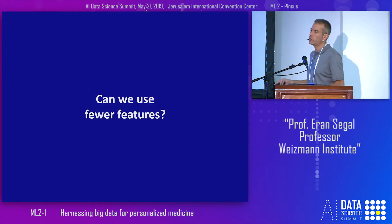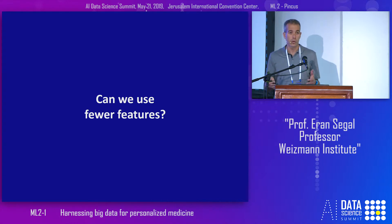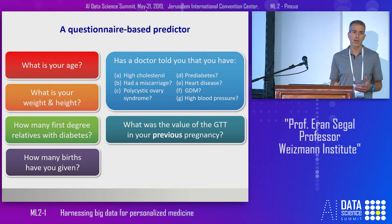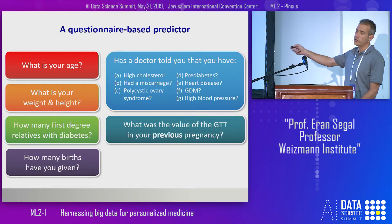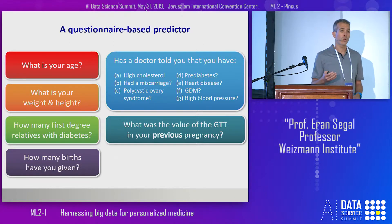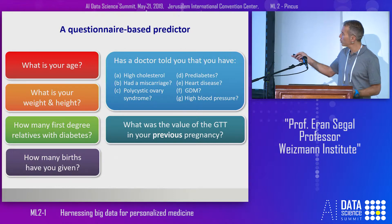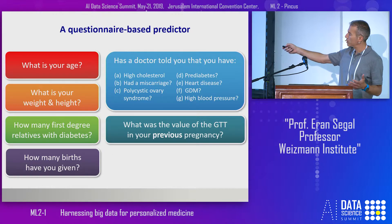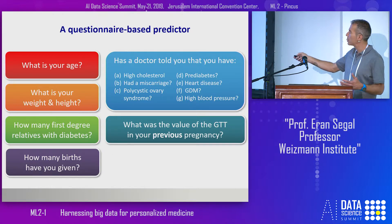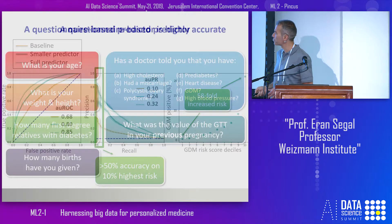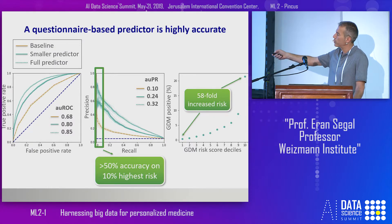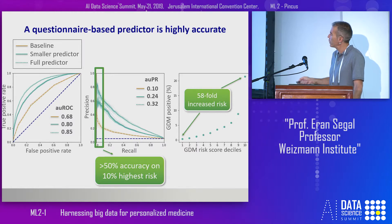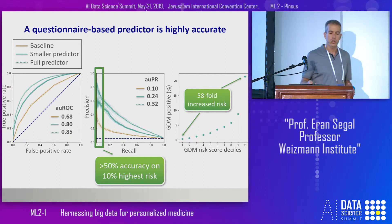We then asked whether we could reduce the 2,000 features to a much smaller set. Using the feature attribution framework, we identified a small set of very important features and derived a very simple questionnaire — a set of questions that every woman can answer about herself, even in a simple app. These are just age, weight, height, relatives with diabetes, previous glucose tolerance test results, previous pregnancy history, and some previous diagnoses. A model based just on this simple questionnaire achieves not-quite-as-good but still very high-quality predictions, and can also identify and prioritize women at high risk for effective intervention, with very large increases in risk across deciles.